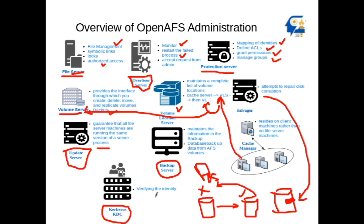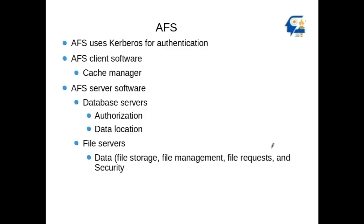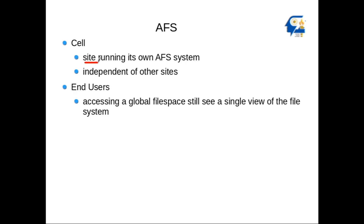Kerberos KDC provides identity verification. When a client makes a request, the cache manager is checked first for data. If the cache manager doesn't have the data, it goes to the volume server. The cache manager runs on each workstation — when it opens directories from OpenAFS, files get cached locally, which makes access efficient.